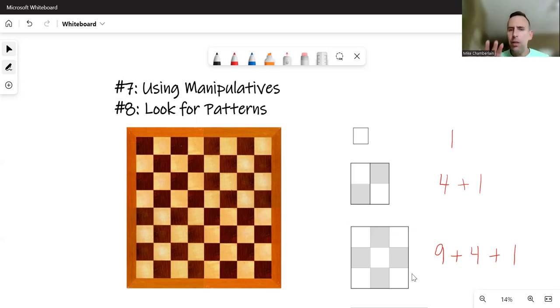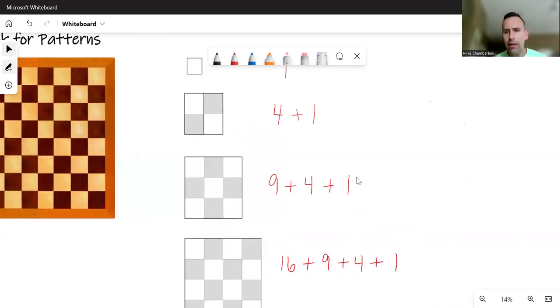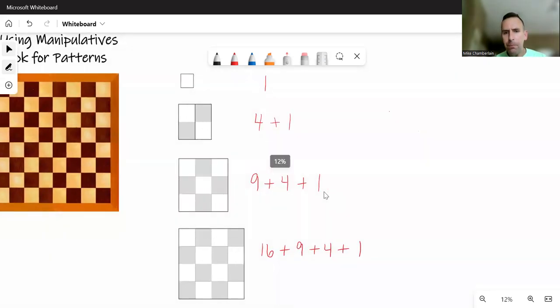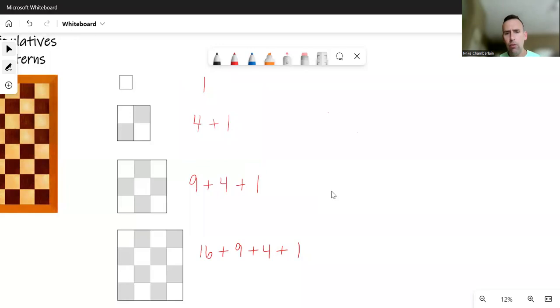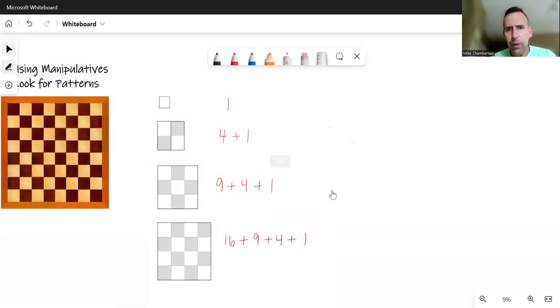So that's kind of using manipulatives. Looking for patterns, I want to encourage you to go back and think about what we did when we wrote these out. Like, what were we actually doing? Well, we were counting the small squares, right?